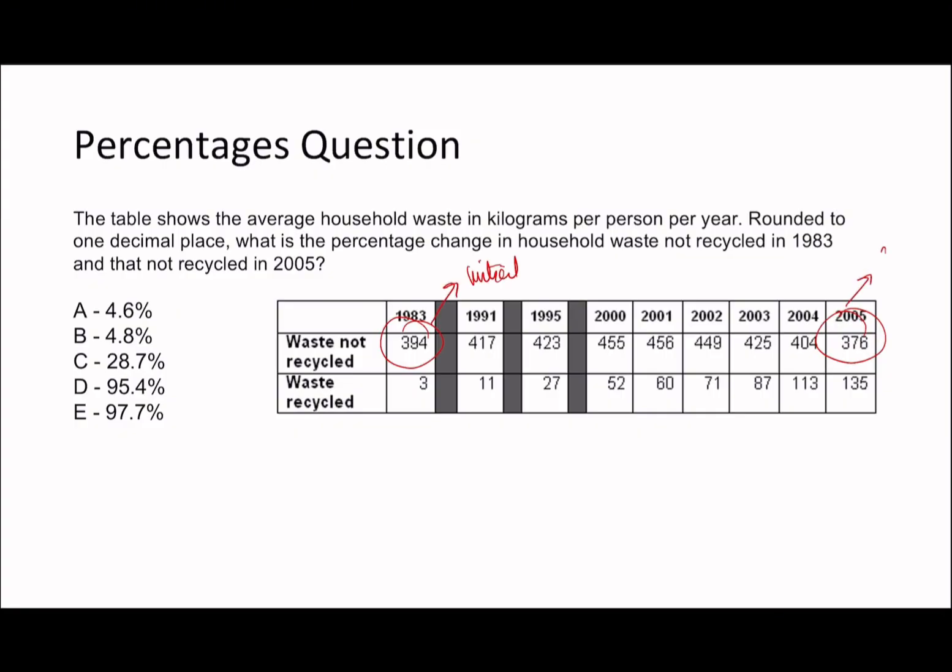Okay, so once again remember, chronologically this is your initial value, this is going to be your final value. So percentage change equals, remember we've got shortcut, final divided by initial subtract 1 and then times this whole thing by 100. So that's just going to be 376 divided by 394 minus 1 times 100. So 376 divided by 394 minus 1, which is negative 0.0456 dot dot dot dot, and then times by 100. So you're going to get negative 4.56 dot dot dot, so answer is going to be A, 4.6 percent.